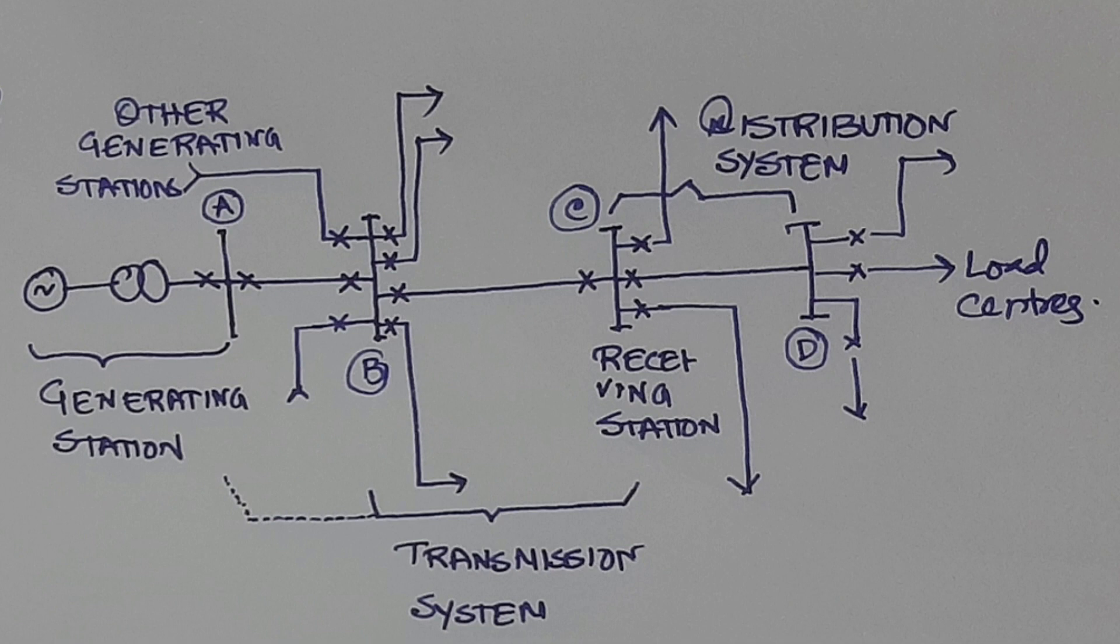to the local area. The voltage is reduced and distributed to local areas and at the end of the distribution system there are load centers from which it is sent to the consumer level. Now let us see where the exact substations are located. All points A, B, C, D are substations.